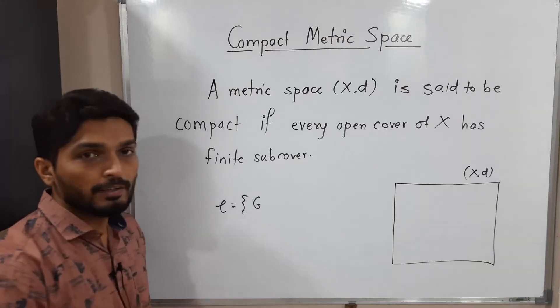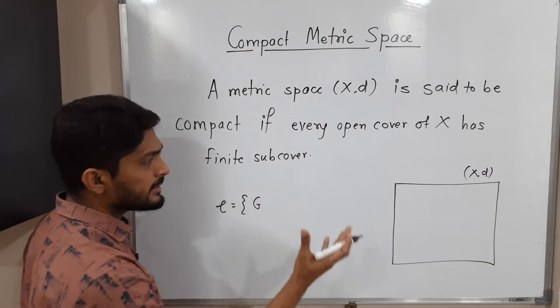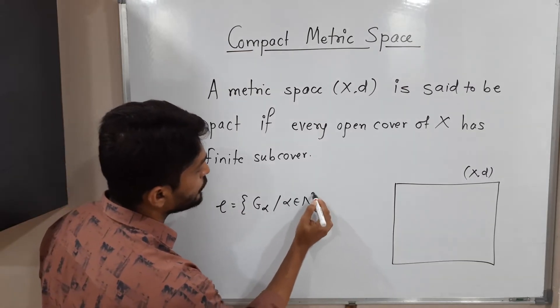In previous videos we have already seen what is a cover, what is a subcover, what is an open cover. So all these concepts we are going to use here: script C = {G_alpha : alpha belongs to lambda}.